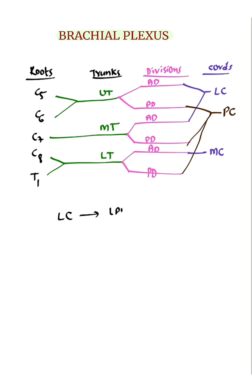Lateral pectoral nerve, lateral root of median nerve, and musculocutaneous nerve. Medial cord gives 5 branches.